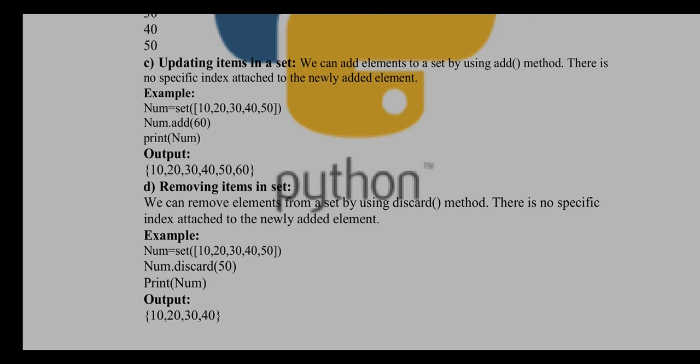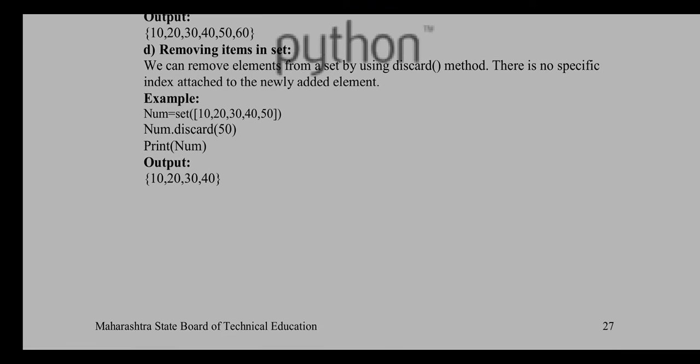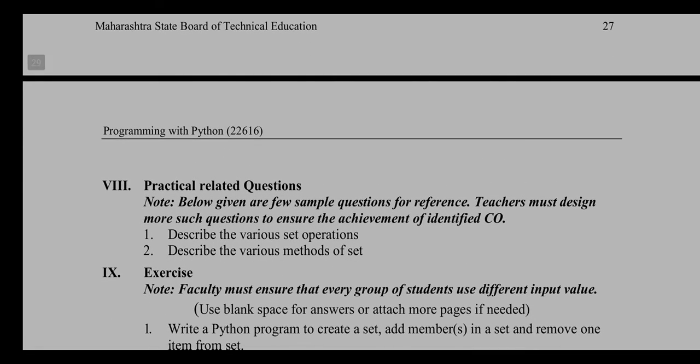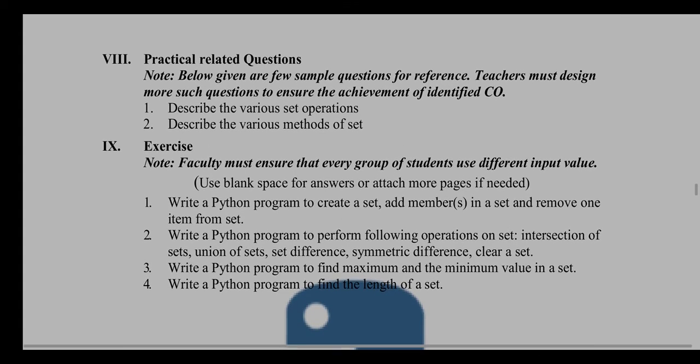When you are printing that particular set, it's going to show six elements: 10, 20, 30, 40, 50, and 60. If you want to remove the element, use discard() method to remove the specific element. This way you can perform various operations on a set.